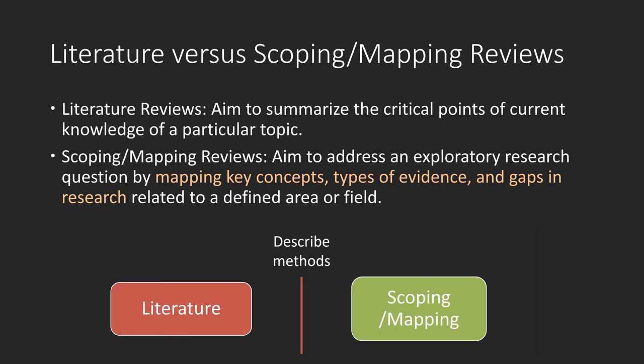Literature reviews aim to summarize the critical points of current knowledge of a particular topic. A literature review can be a section in an article or an entire article by itself. When it is a section in an article, especially an introduction to a study, it is to demonstrate how a study fills a gap in research or compare this study with other studies. When it is an entire article, in most cases, it is to organize and describe a topic or discuss variables within an issue or problem.